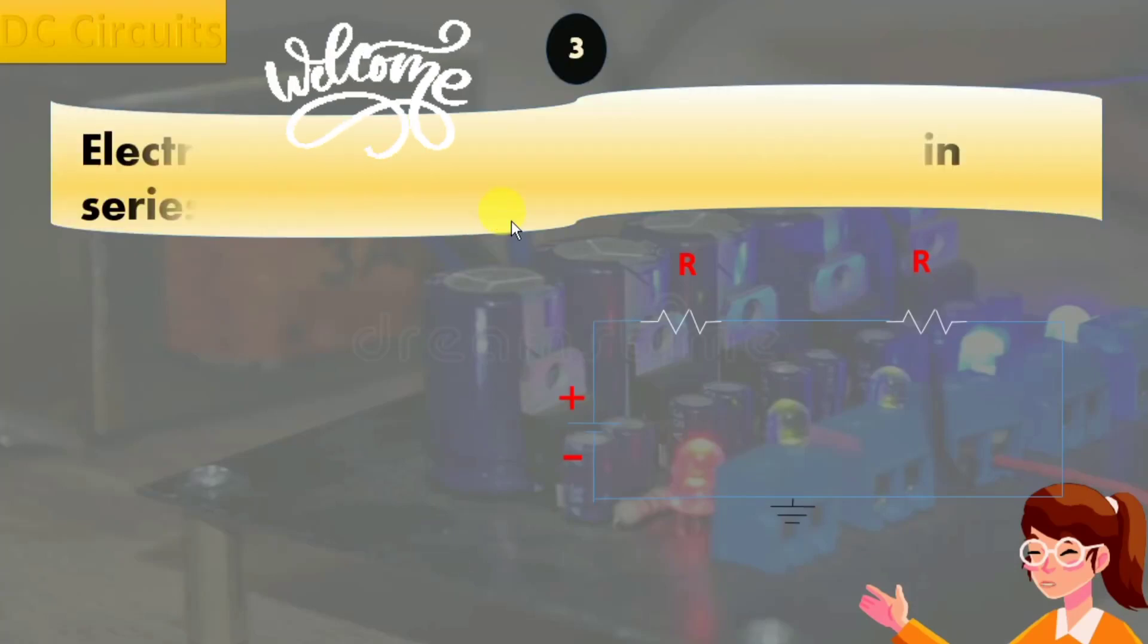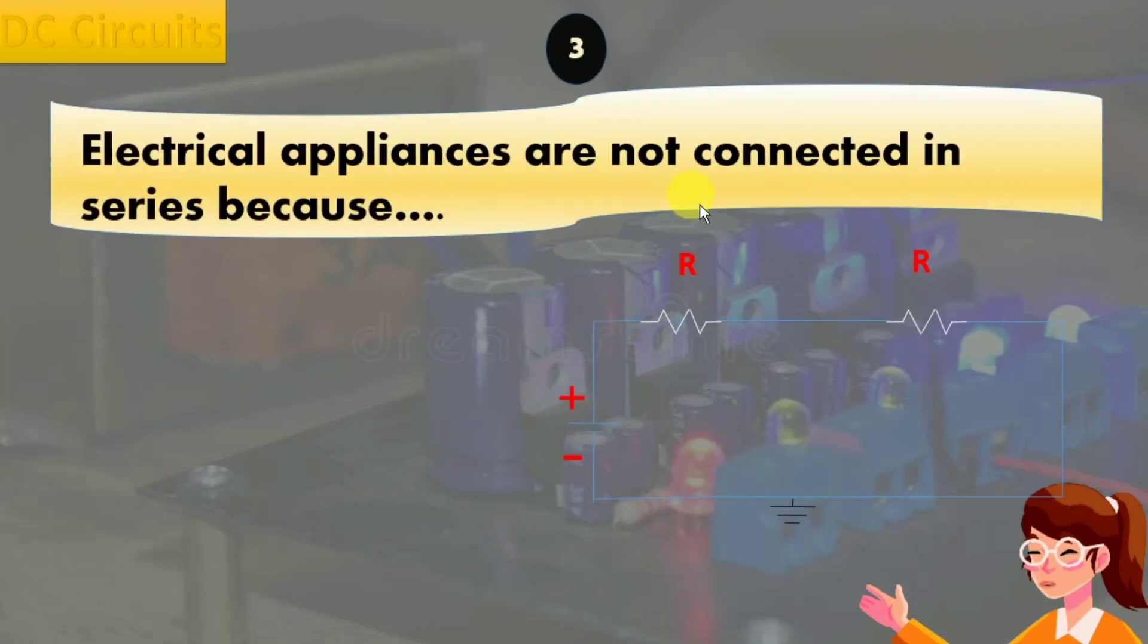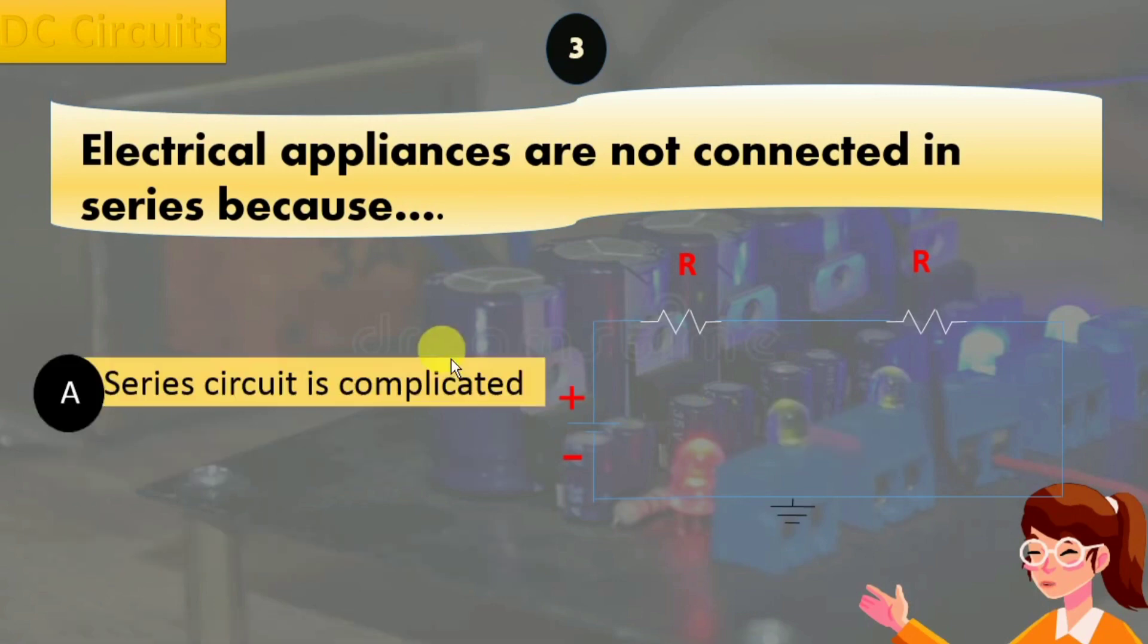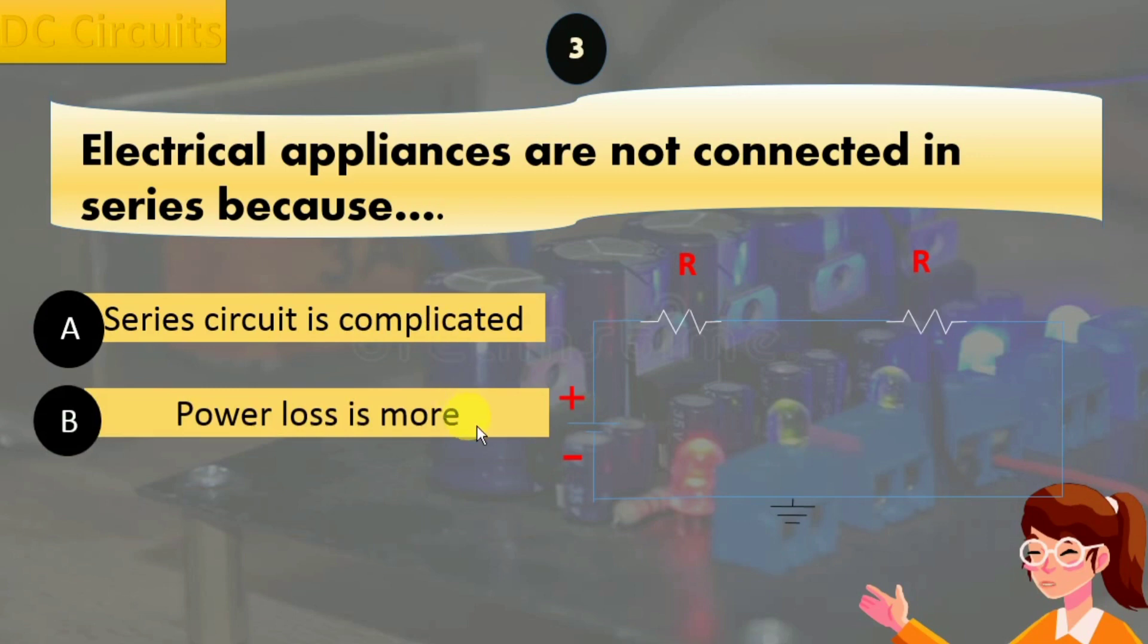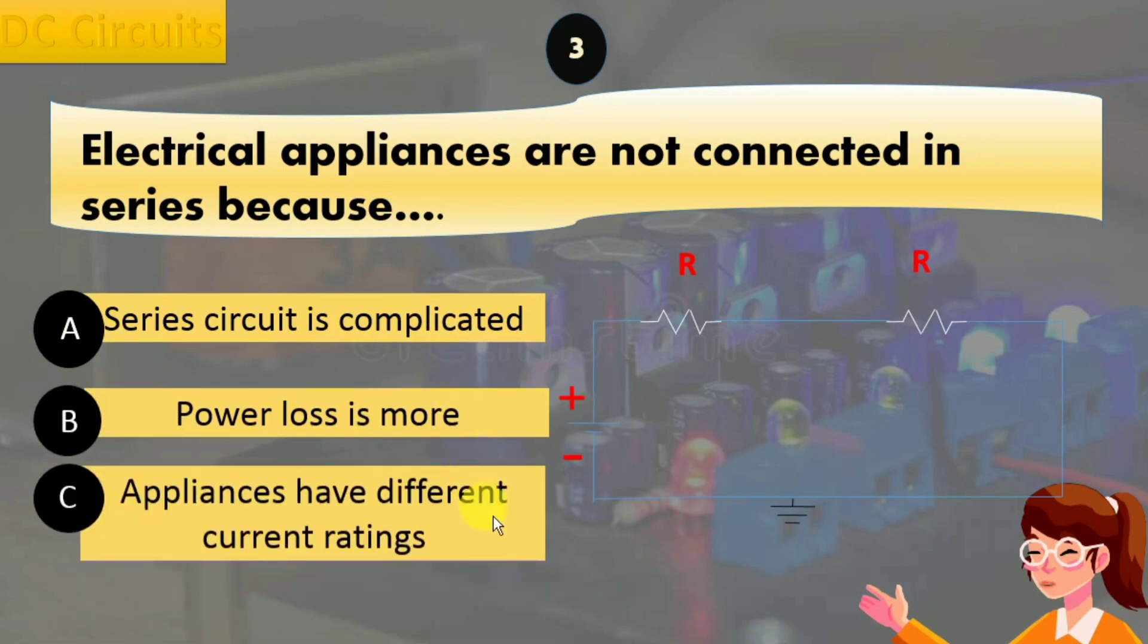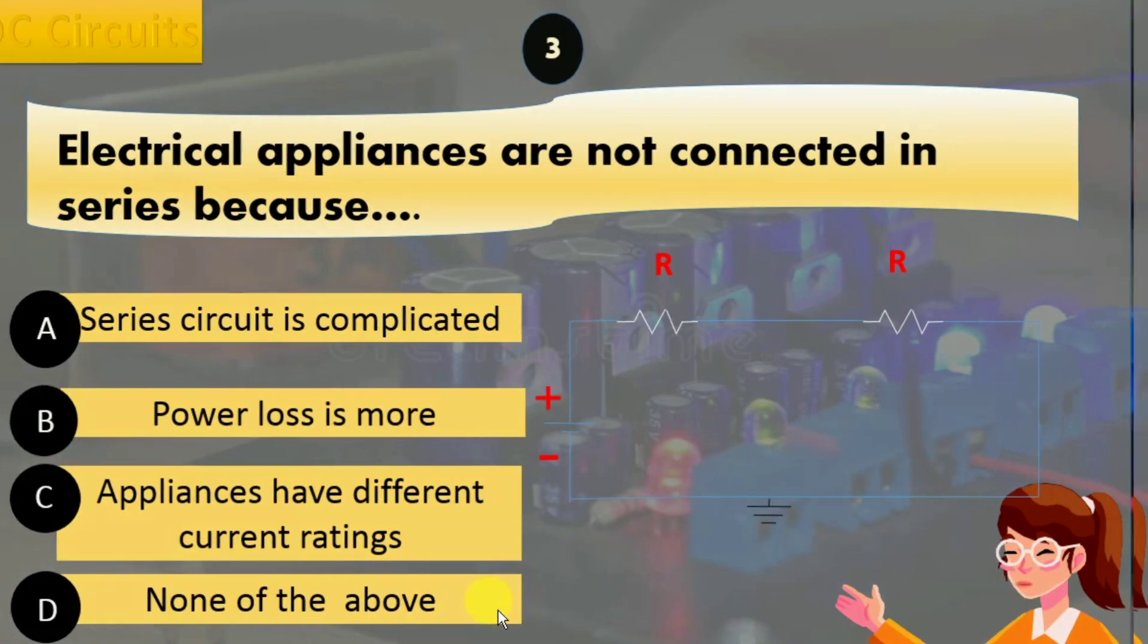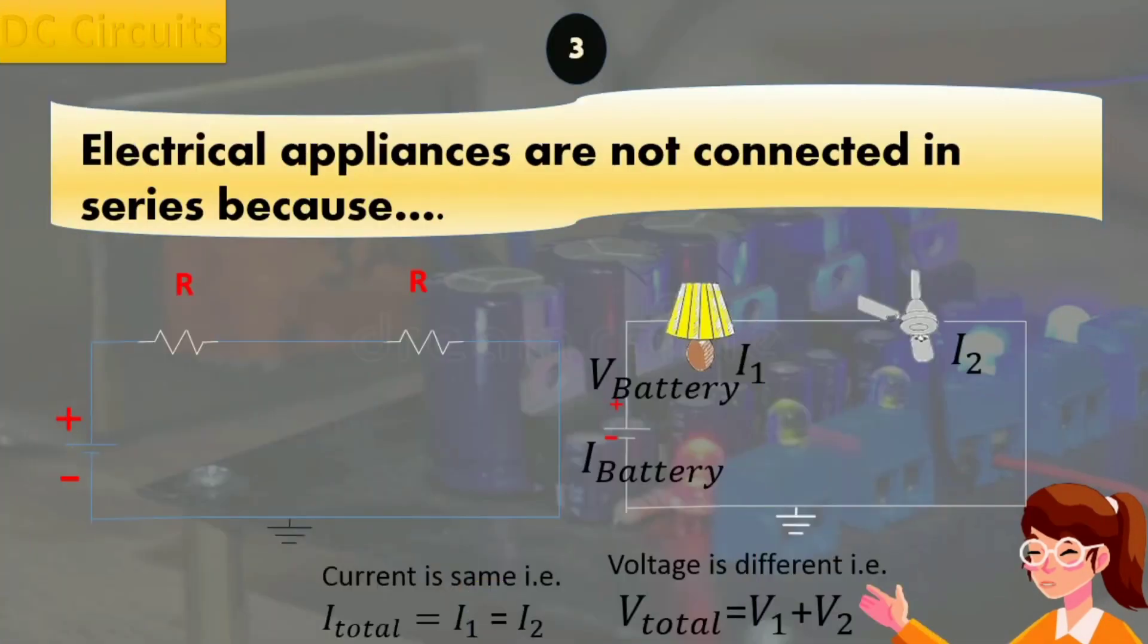Assalamu alaikum everyone. Today's question is: electrical appliances are not connected in series because: Option A, series circuit is complicated; B, power loss is more; C, appliances have different current ratings; and D, none of the above.